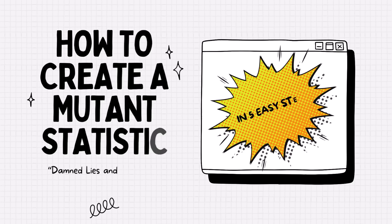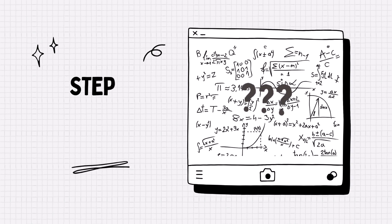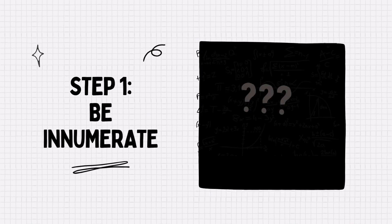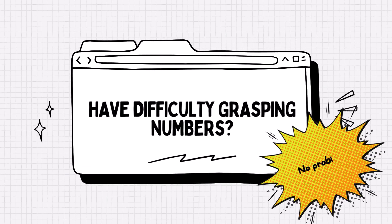How to create a mutant statistic in five easy steps. Step 1: Be innumerate. Innumeracy is the mathematical equivalent of illiteracy. It refers to difficulty grasping numbers and calculations.